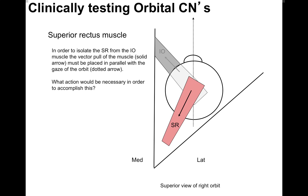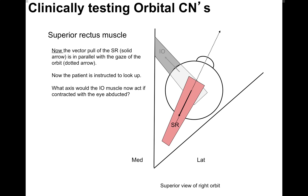What action would be necessary in order to accomplish this? You have the patient abduct their eye. Now the vector pull of the superior rectus — the solid arrow — is in parallel with the gaze of the orbit — the dotted arrow. The patient is then instructed to look up. What axis would the inferior oblique muscle now act on if it contracted with the eye abducted? It acts on the z-axis — it torques the eye — and that's something that's not easy to see.